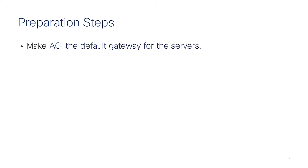Before you start with the deployment, here is a summary of the key preparation steps. The first important point is that ACI must be the default gateway for the servers. The BD subnet IP of ACI is the default gateway for the servers, not the firewall or the load balancer.